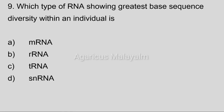Ninth question: Which type of RNA showing the greatest base sequence diversity within an individual is? Option A: mRNA. Option B: rRNA. Option C: tRNA. Option D: snRNA. Correct answer: Option A, mRNA.